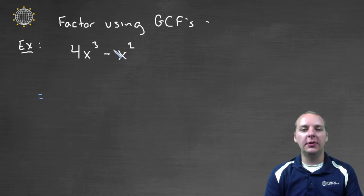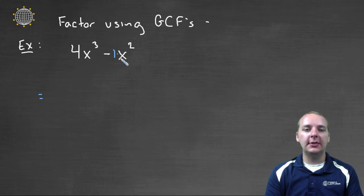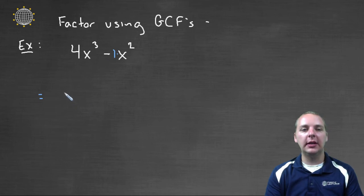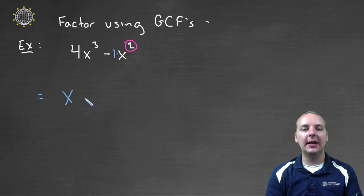I'm going to look at the coefficients first. I've got a 4 and I've got a 1. The GCF between 4 and 1 is just 1. Here I've got an x³ and here I have an x². So they both have an x. So I can at least pull out one x. And in fact I can pull out as many as the lowest or smallest exponent. So I can pull out at least an x².